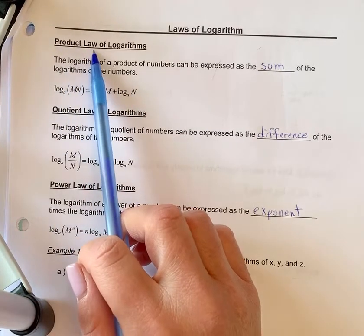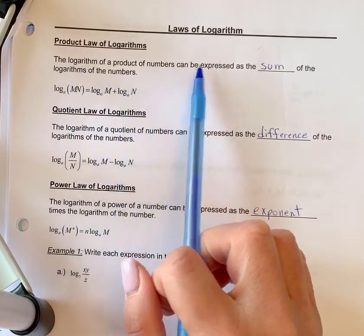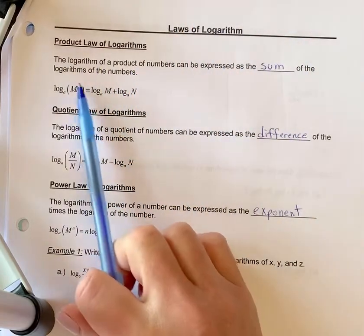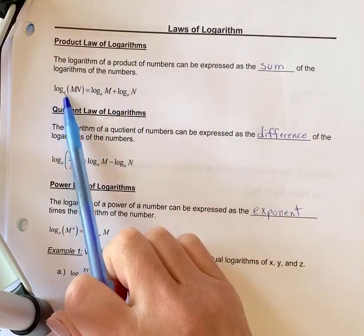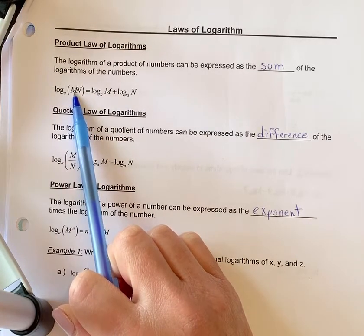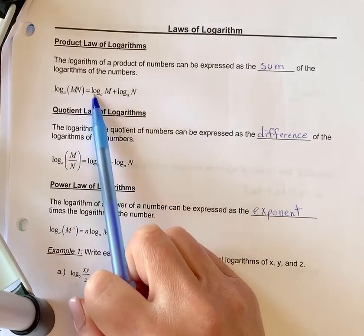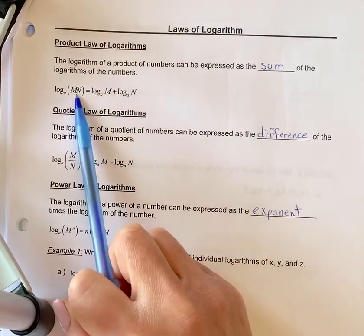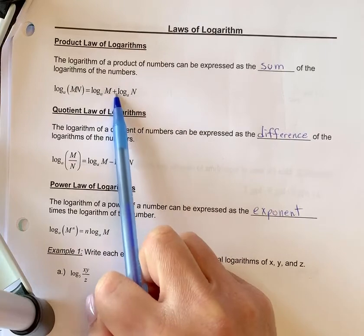The first one's called the product law. The log of a product of numbers can be expressed as the sum of the logs of the numbers. If you have an argument where there's a product, meaning multiply, you can expand this by writing a log in front of both of them. So log m plus log n. When it's multiply, you expand by putting a sum.